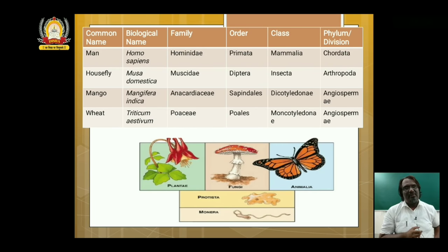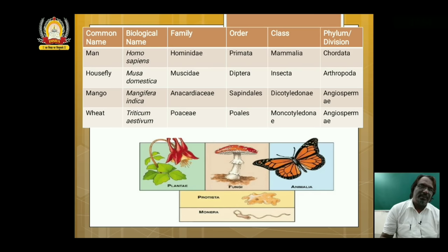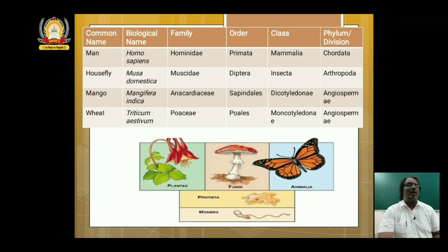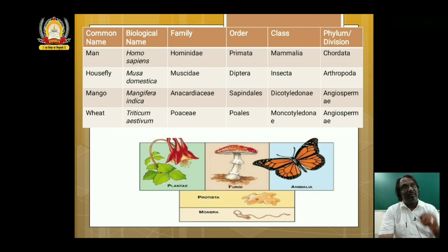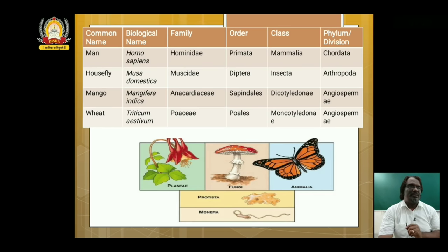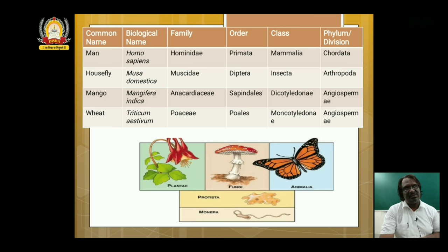Lastly, I am concluding the lesson with the same picture as in the previous slide — five kingdoms: Monera, Protista, Fungi, Plantae and Animalia. See this video two or three times, read the content in the textbook, write the important points, write the terms, the tough terms, practice yourself, empower yourself so that you will be competent. See you in the next class. Until then, please take very good care of yourself. God bless you, thank you.